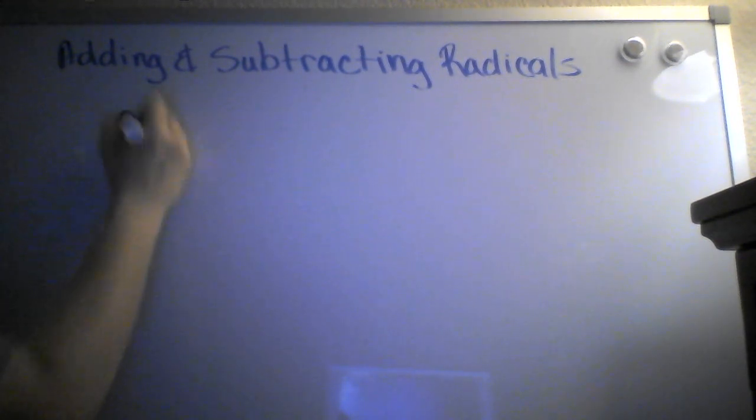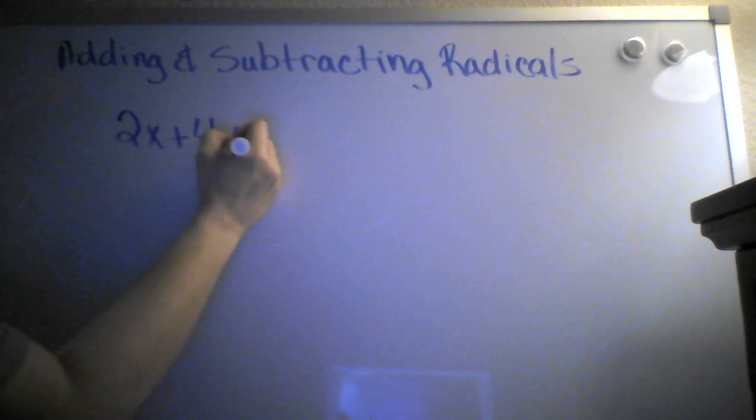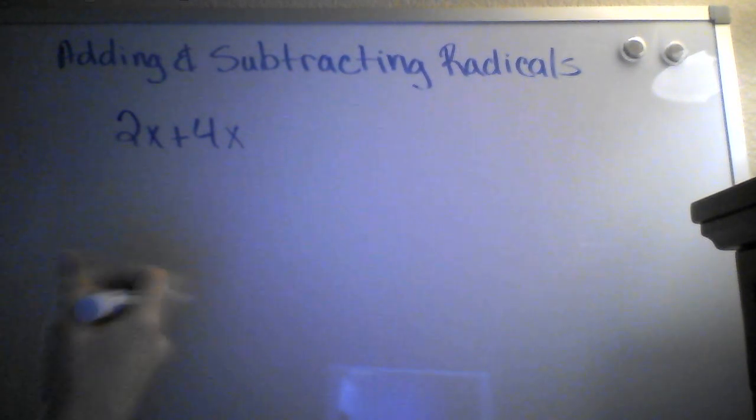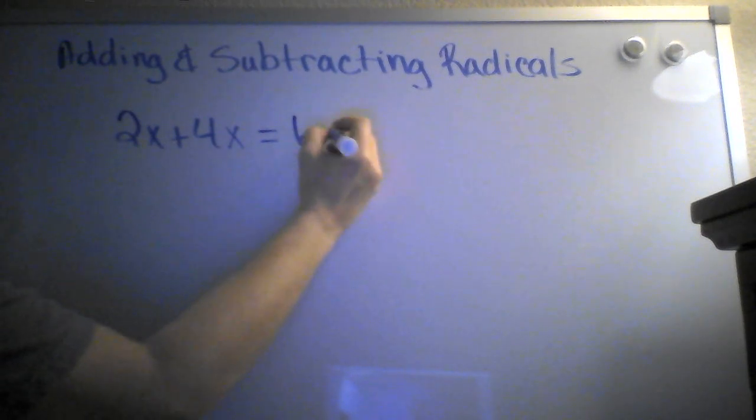So if I had 2X plus 4X, I could add those together because they're like terms – they're both in terms of X. I add the coefficients together, which gives me 6, and then my variable stays the same.